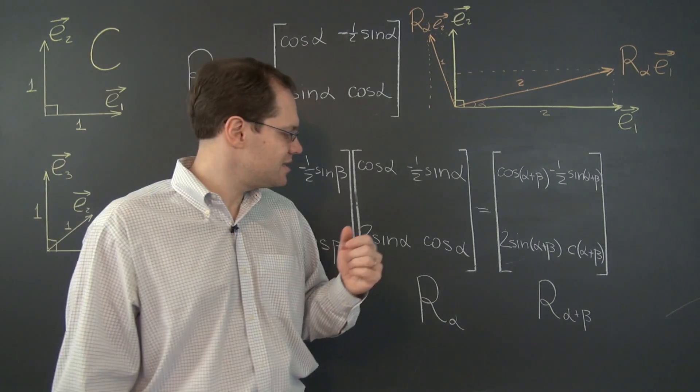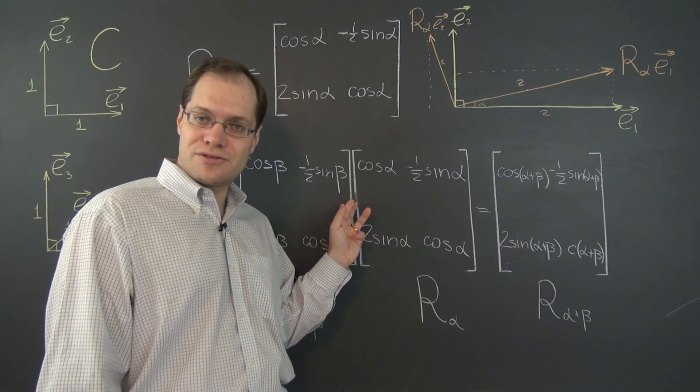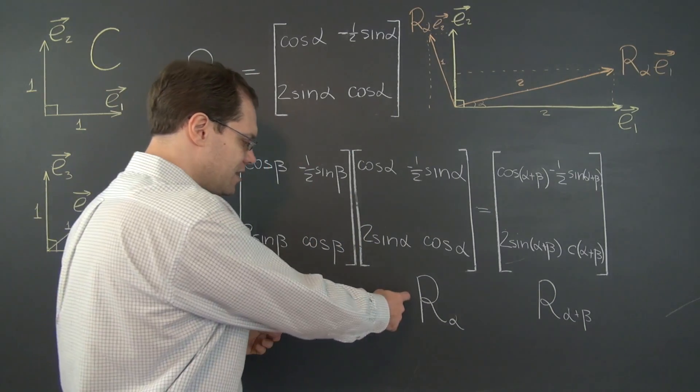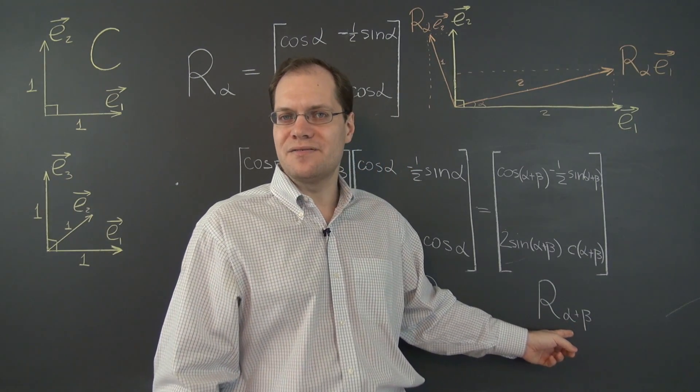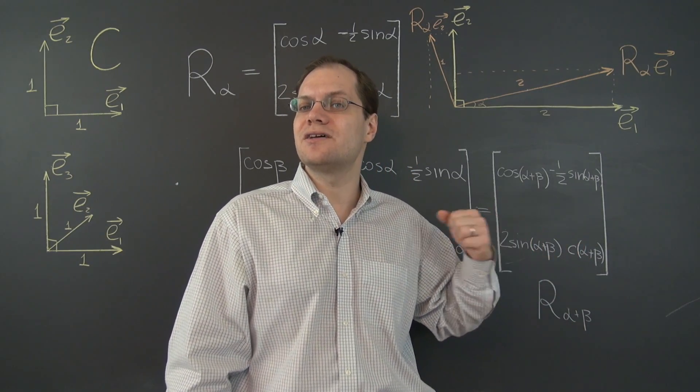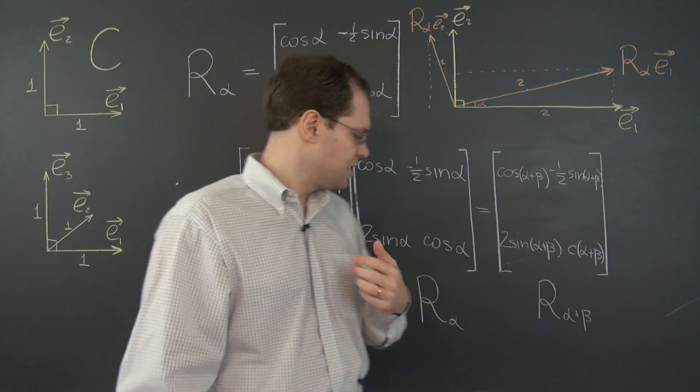And this, once again, tells us that these matrices commute. The argument is the same. If we were to multiply them in the opposite order, we would get R of beta plus alpha, which of course is the same as R sub alpha plus beta. They commute.